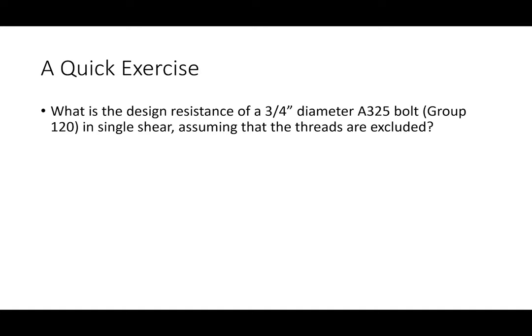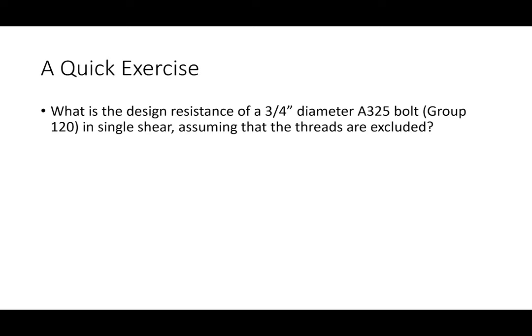That is how you compute the capacity of a bolt in shear — and I'm telling you now you're never going to do it again. The reason is because of Table 7-1 on page 7-21 in the manual. This is one of the most useful handy guides in the manual and is definitely worth bookmarking. I highly recommend you also bookmark Table 7-2 and 7-3, which are all right next to one another. There's no digital copy of the manual yet, so I just took a picture of this page for the slide.